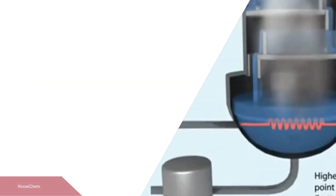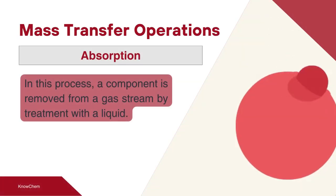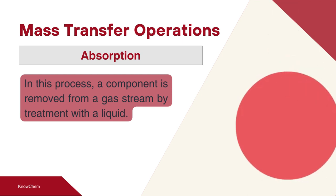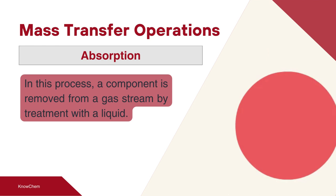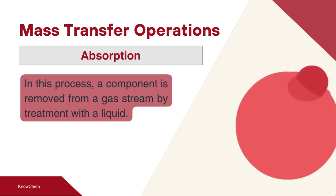The next operation we discuss involves fluids, and that is absorption. This operation is applicable for the separation of components from gases; a liquid solution is used to remove the component from the gases. One example is scrubbers, which are widely used in every industry. They are employed with a stream of gases that has to be discarded into the atmosphere. To prevent pollution, pollutants are absorbed in water and the remaining gas is vented off. Absorption is most commonly done in water.